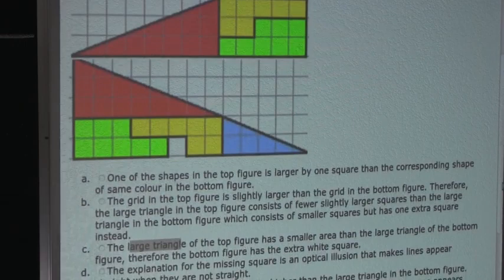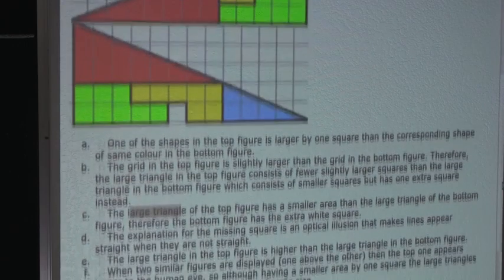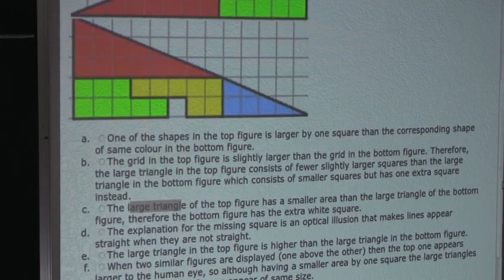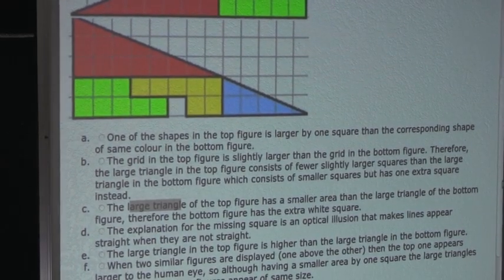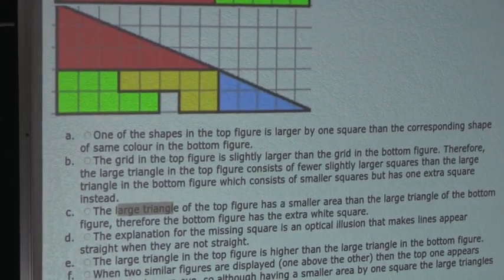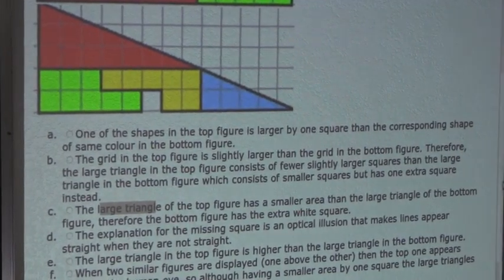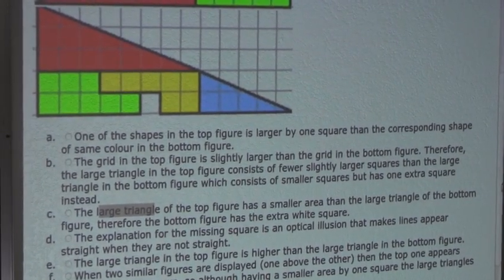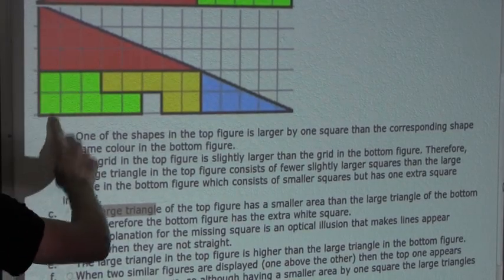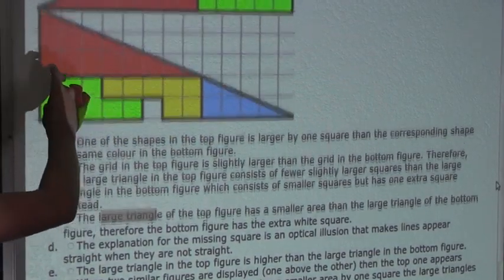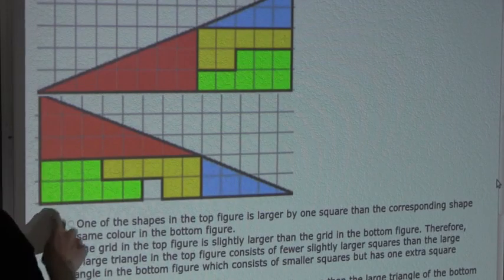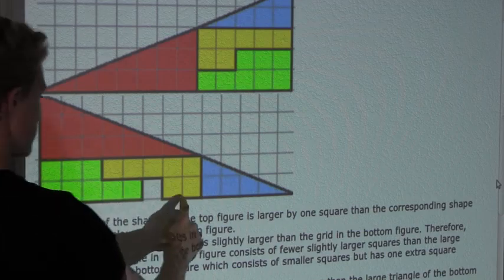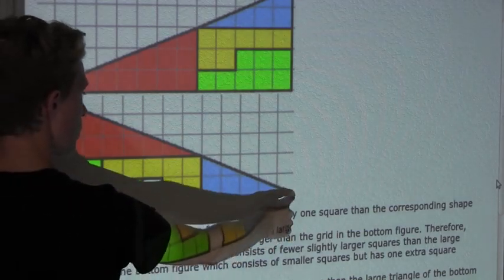Now option B: the grid in the top figure is slightly larger than the grid in the bottom figure, and therefore the large triangle in the top figure consists of fewer slightly larger squares, whereas the bottom figure has smaller squares but one extra square. Let's check — the height of the bottom figure is 5 squares and the base is 13 squares.